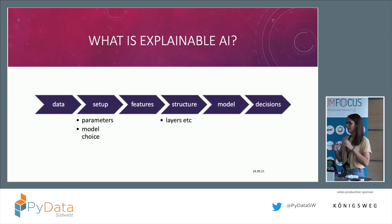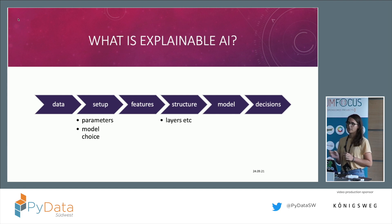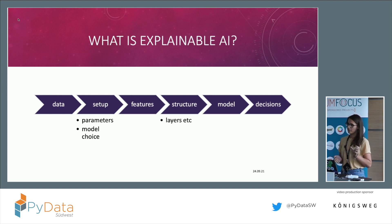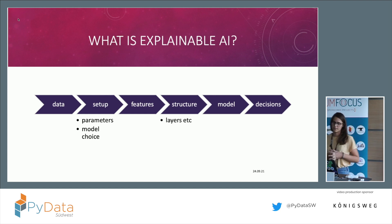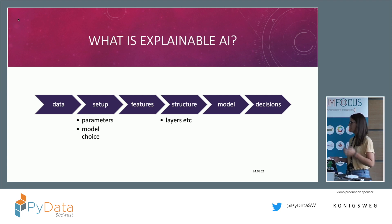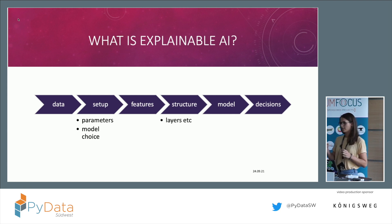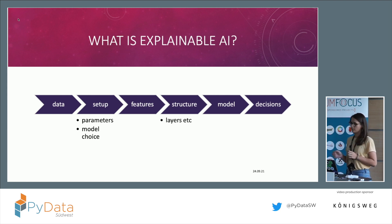I say AI systems because the model is not the only parameter in explainability — you want to understand the whole system behind it. The first steps in the system — the data, the setup, features, and structure — are already quite visible. You can display the data, make graphs, explain the setup and parameters. But how the model creates decisions is very hard to grasp, so I will focus on those last two steps.